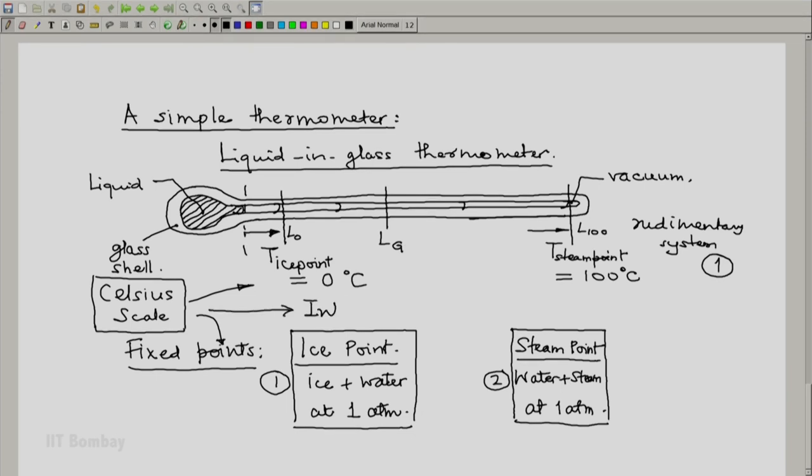And then we have an interpolation law which says that temperature of this system G will be, if Lg happens to be 0, it will be 0 degrees C. If Lg happens to be 100, it will be 100 degrees C. So this will be something like Lg minus L0, simple interpolation law, L100 minus L0 multiplied by 100 units of degree Celsius. This would be the interpolation law.